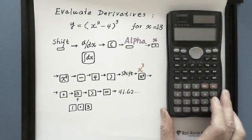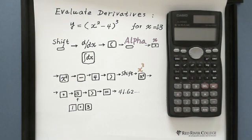This is the Casio FX991MS calculator. I'll show you this question. When we do the derivative for y equals x squared minus 4 to the power of 3, we evaluate this derivative for x equals 1.3.